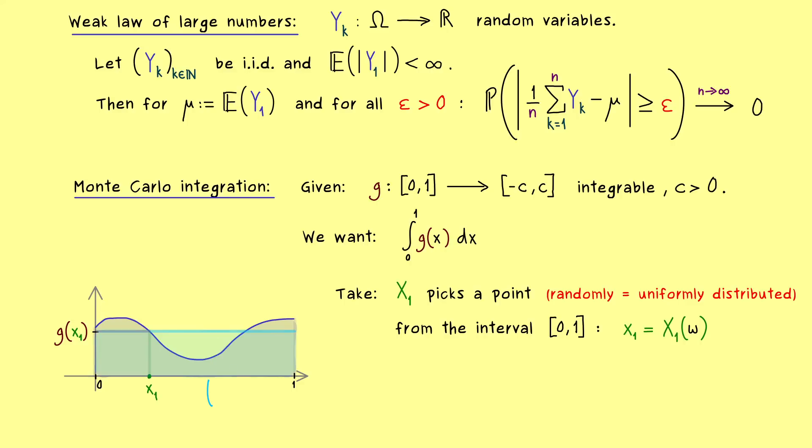And with that we get here a whole rectangle whose area approximates the whole integral. Obviously this is a really rough estimate but still it works here. In other words the random variable g(X₁) is what we actually need for the integral calculation here. Therefore we will call this one Y₁.